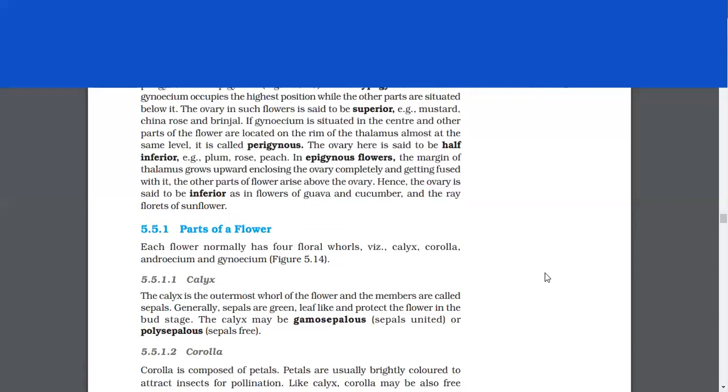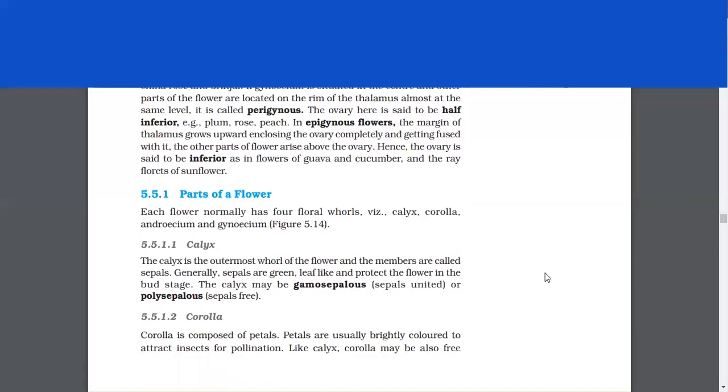In epigynous flowers, the margin of the thalamus grows upward, enclosing the ovary completely. Hence, the ovary is said to be inferior as in flowers of guava, cucumber and the ray florets of sunflower.